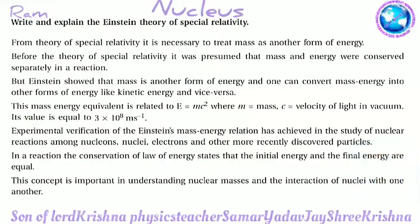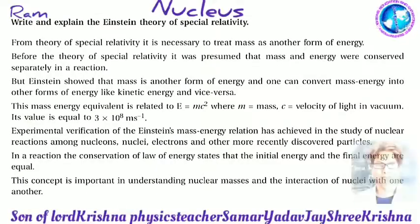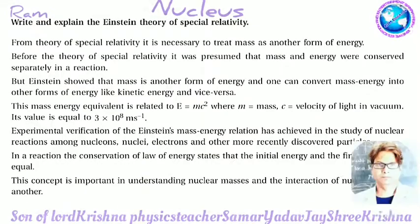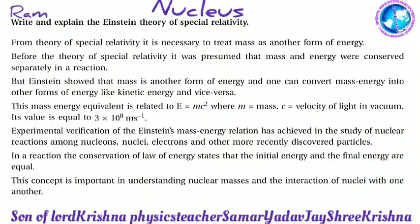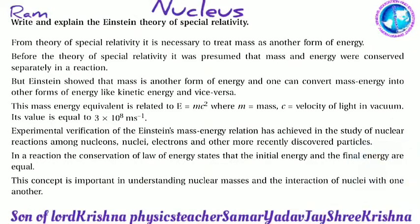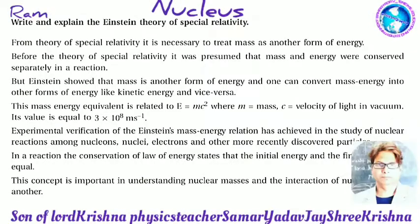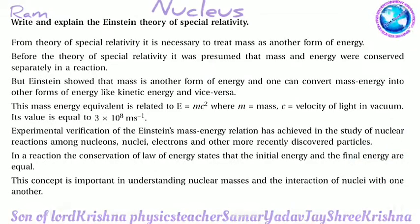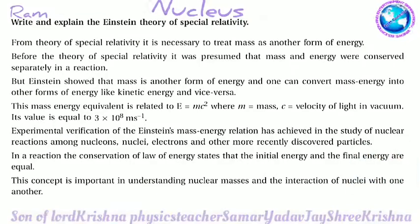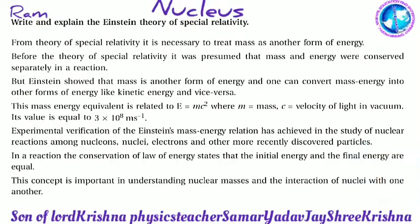This mass-energy equivalence is expressed as E = mc², where m is mass and c is the velocity of light in vacuum, with value c = 3 × 10⁸ m/s.